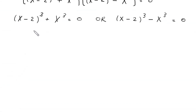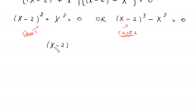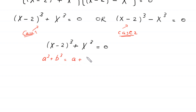It means we have two cases. This is case 1 and this is case 2. First we solve case 1: x minus 2 whole cubed plus x cubed is equal to 0. We have sum of two cubes, so we use this algebraic identity: a cubed plus b cubed is equal to a plus b times a squared minus ab plus b squared.